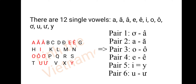There are 12 vowels in Vietnamese: Ê, E, Ơ, Â, A, O, Ô, U, Ư, I, and Y. I'm going to divide these 12 vowels into 6 pairs.